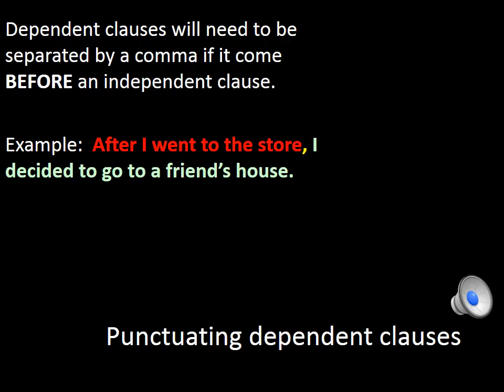Now that we know what clauses are, it's important to know that depending on the order of clauses in a sentence, they require different punctuation. When a dependent clause comes before an independent clause, it needs to be separated by a comma. For example: 'After I went to the store, I decided to go to a friend's house.' 'After I went to the store' is our dependent clause coming before our independent clause, so we need a comma between them. Anytime a dependent clause comes before an independent clause, you always need that comma.